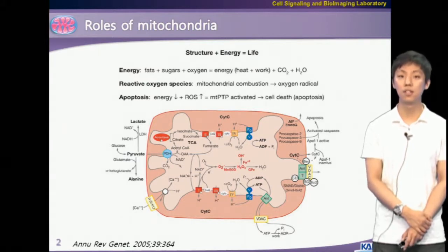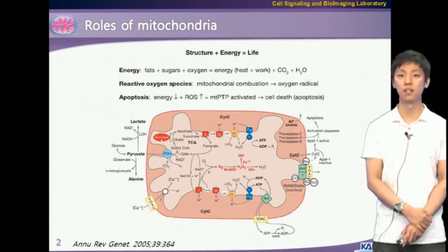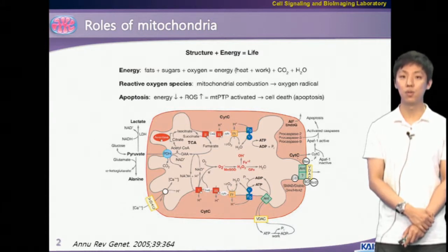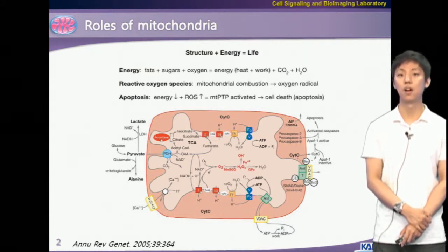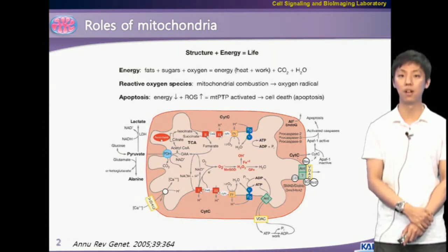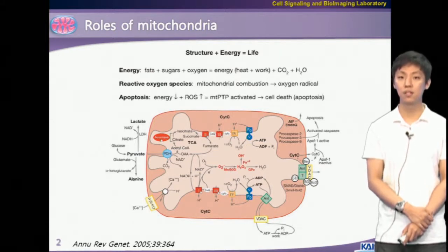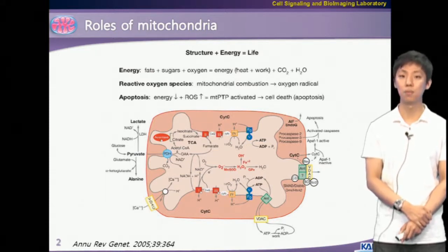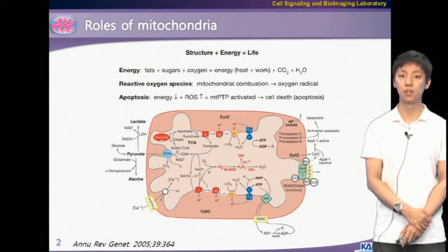Among many intracellular organelles, mitochondria function mainly in production of ATP through oxidative phosphorylation in the inner mitochondrial membrane. During this respiration process, reactive oxygen species, or ROS, are also produced when high-energy electrons escape before they reach the final acceptor, oxygen. Oxidative stress caused by ROS can induce rapid depolarization of inner mitochondrial membrane potential and subsequent impairment of oxidative phosphorylation.